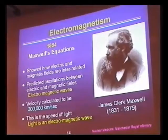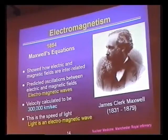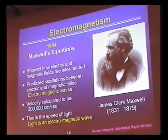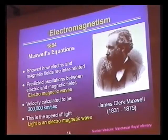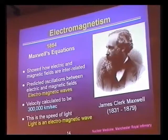The Scottish physicist James Clerk Maxwell in 1864 published a set of equations which showed how electric and magnetic fields are interrelated. Those equations predicted oscillations of these electric and magnetic fields which would give rise to electromagnetic waves. From his equations he calculated the velocity of these waves at 300,000 kilometers per second — exactly the measured speed of light, which is a good indication that light is in fact an electromagnetic wave.